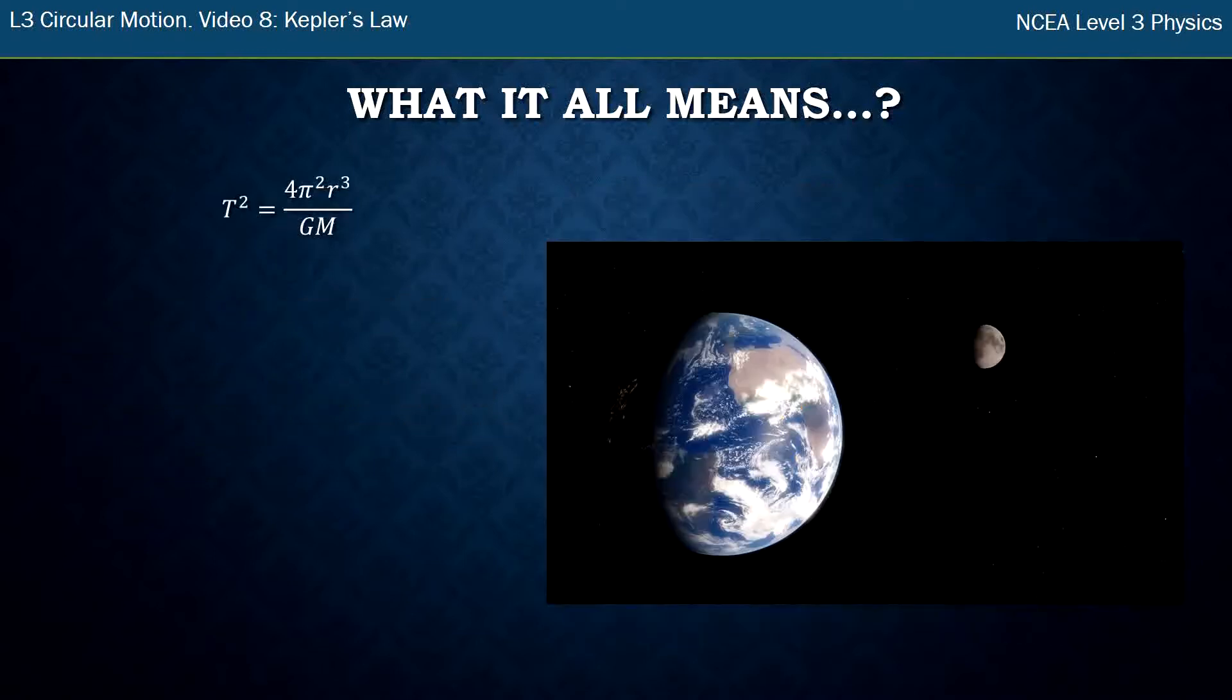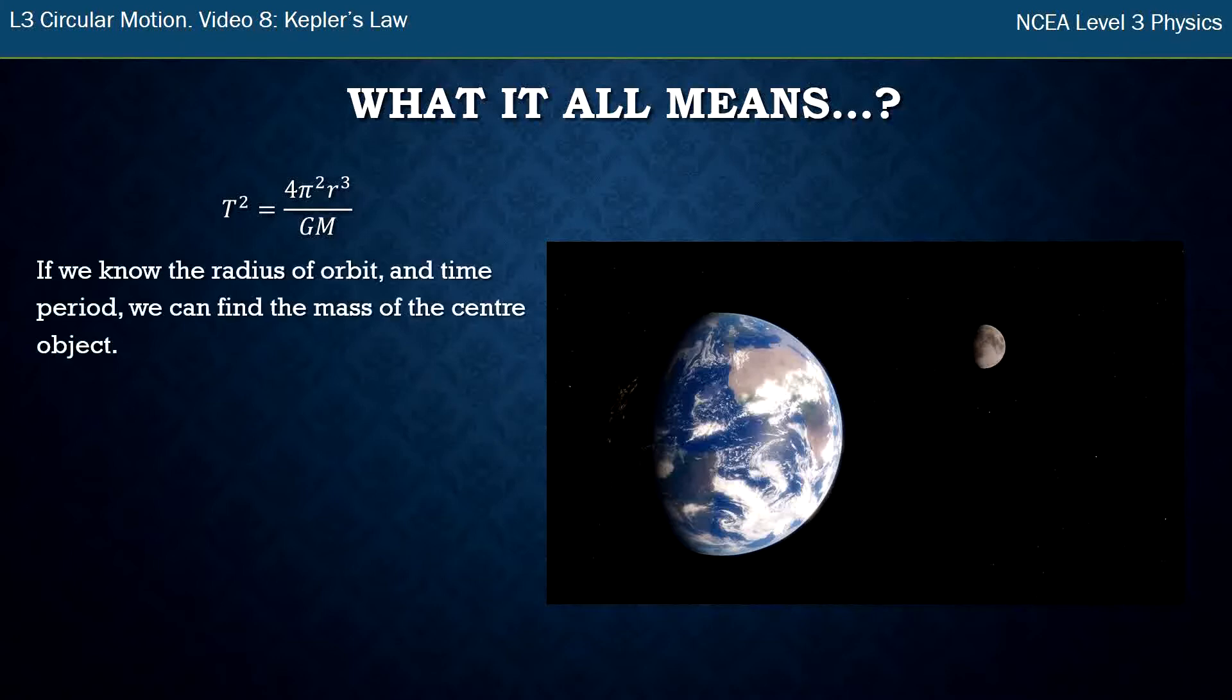The other formula, Kepler's law T squared equals 4π squared r cubed over GM, is again independent of the mass of the thing orbiting. If we know the radius of the moon's orbit and the time period, about 28 days, we can rearrange Kepler's law to find the mass of the earth.